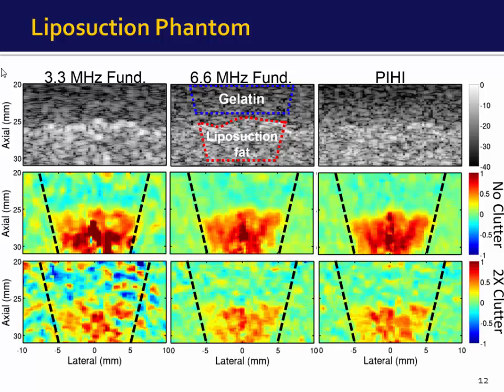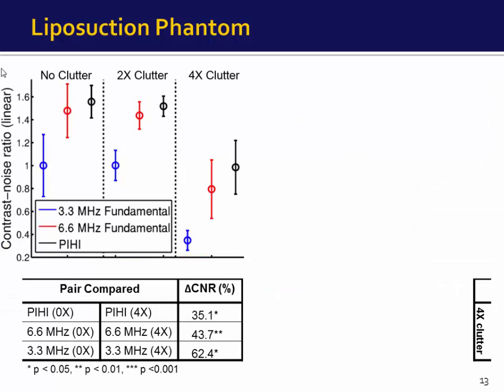With the introduction of clutter, two things were observed. First, there was a decrease in strain magnitude, which based on additional data was mostly due to attenuation of the heating beam from clutter rather than strain underestimation errors. Second, there was a decrease in image quality. Pulse inversion had the smallest relative CNR degradation at 35.1 percent, compared to 43.7 and 62.4 percent for 6.6 and 3.3 MHz data respectively.